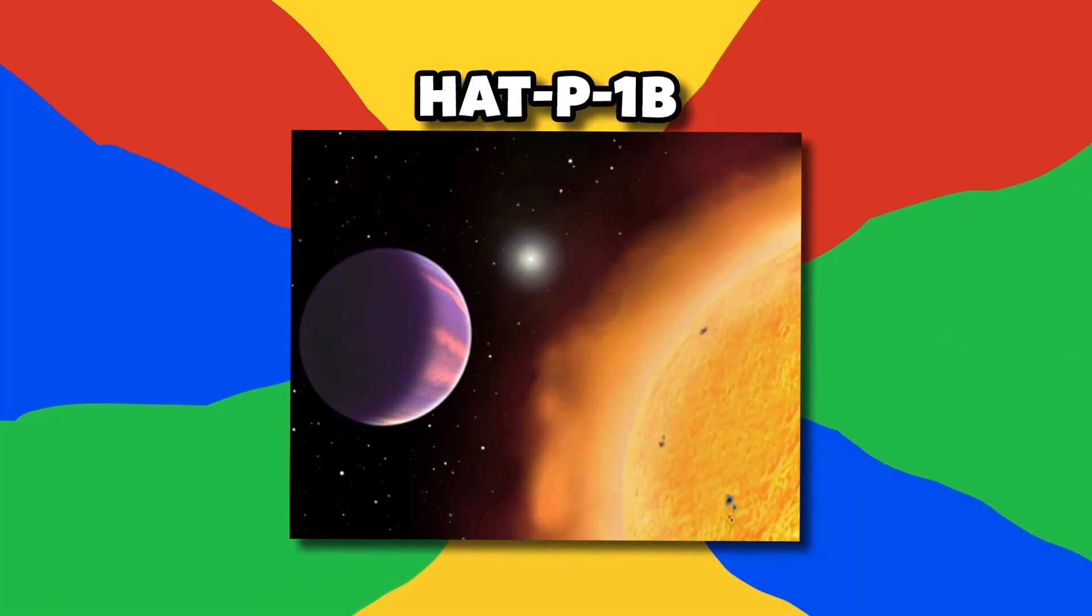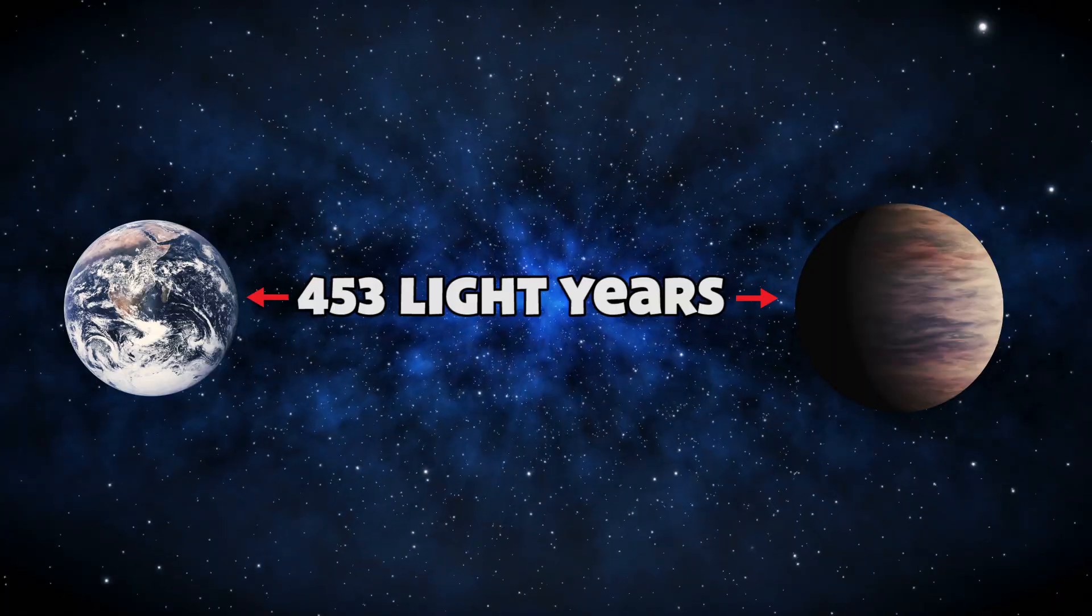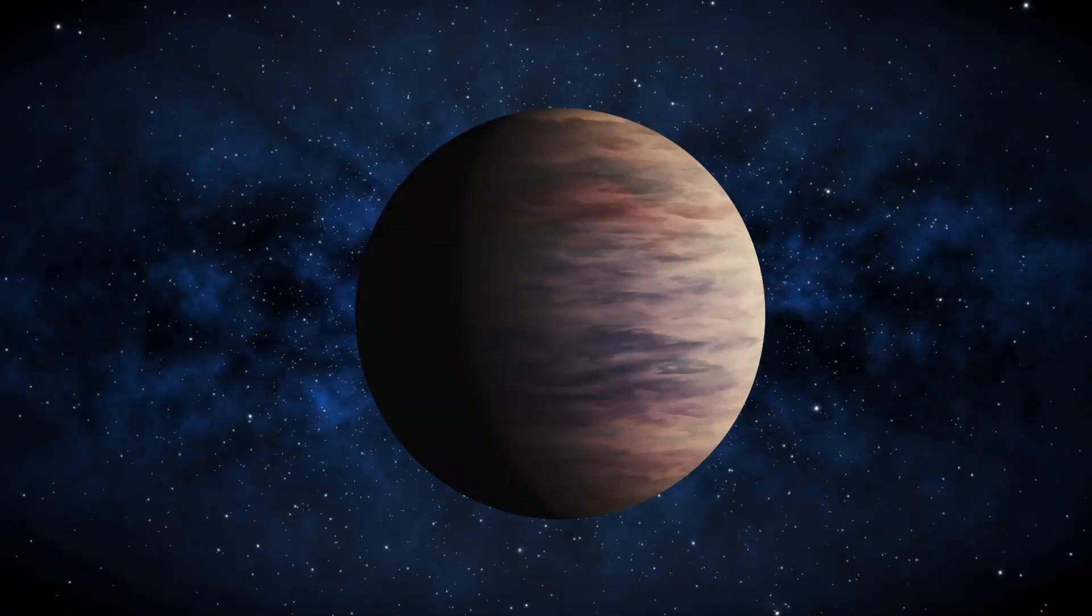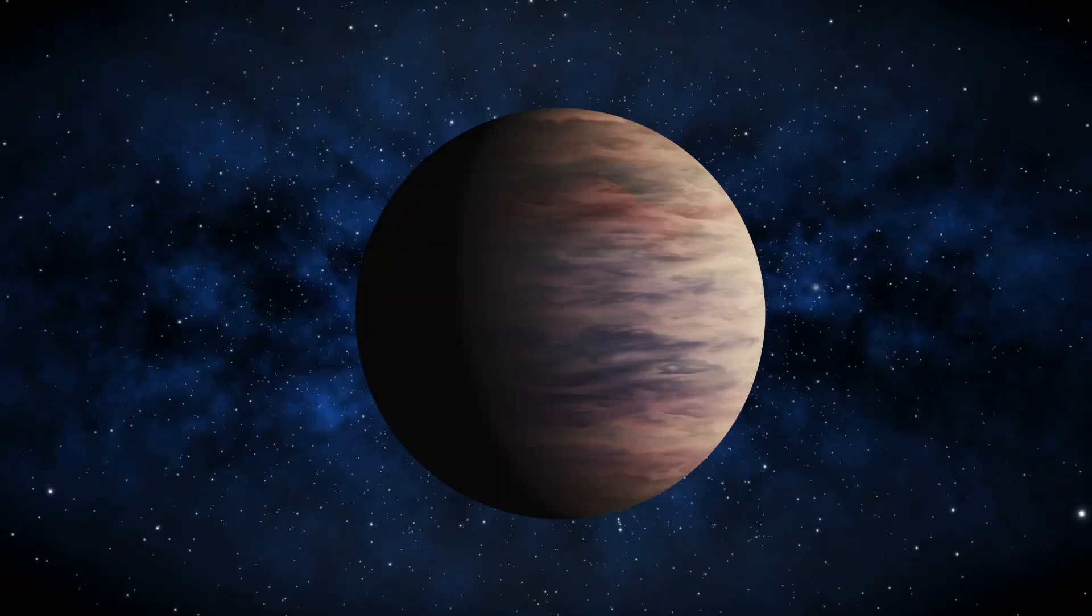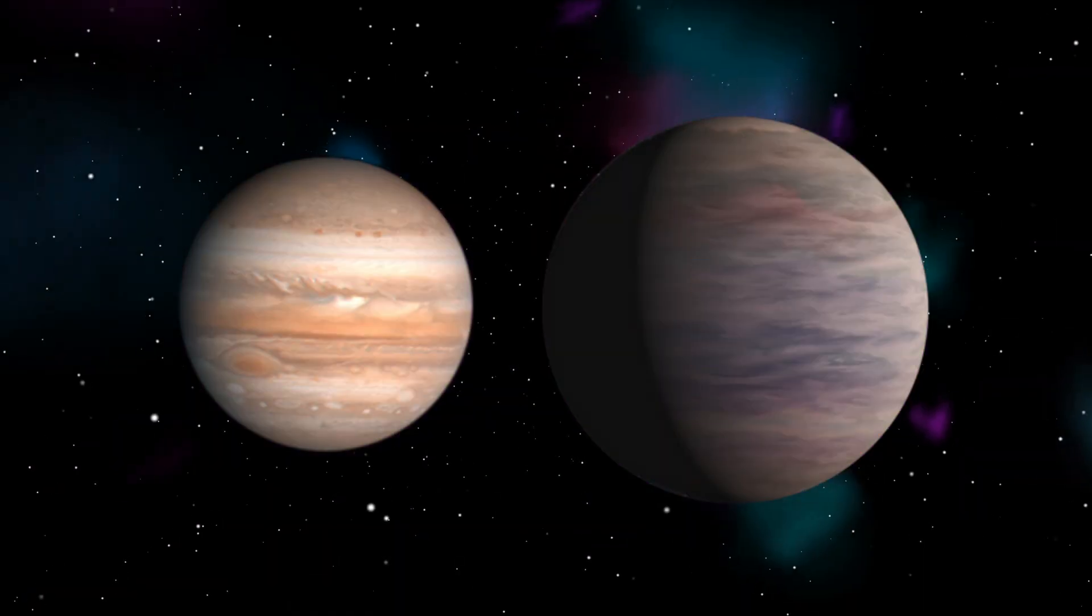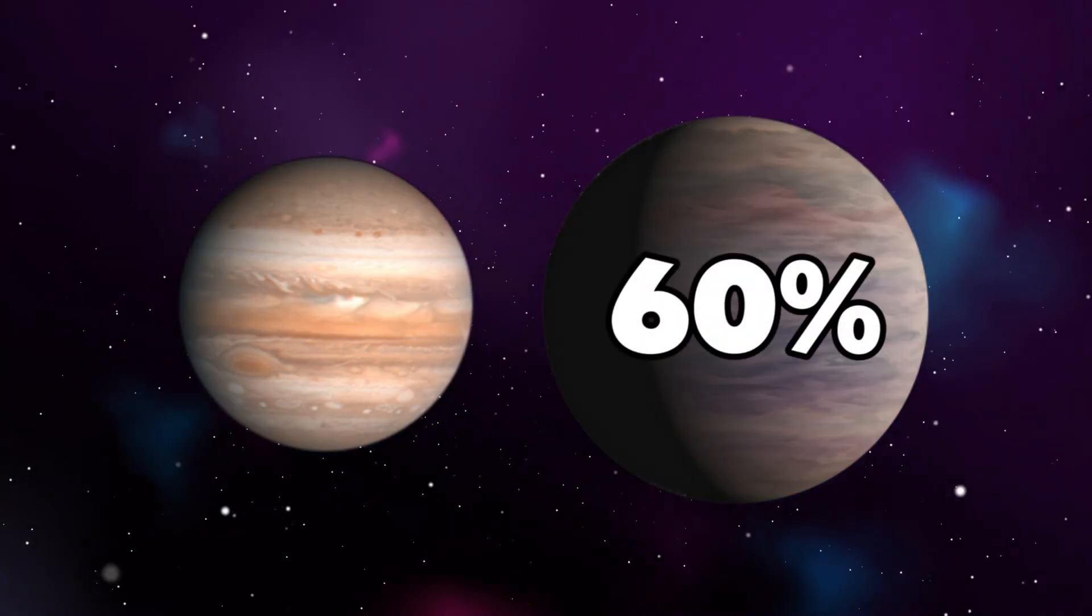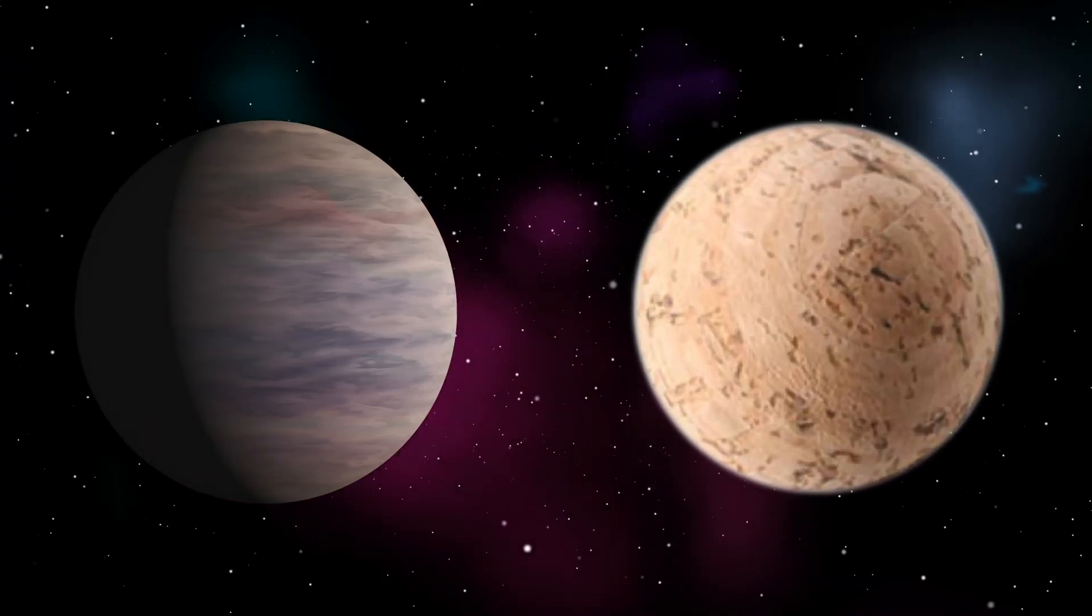Number 9, HAT-P1b. Located 453 light-years away from us, the extrasolar planet HAT-P1b rivals the size of the largest planet of our solar system, Jupiter. While it's technically as large as Jupiter, its total mass is only 60% of Jupiter's, giving it a weight equivalent to a cork ball of the same size.